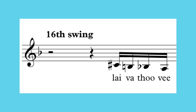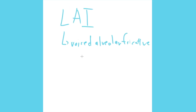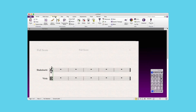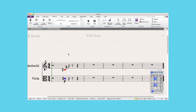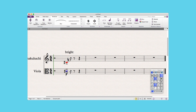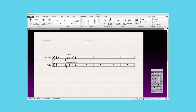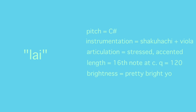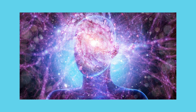Let's take the first note, which is C-sharp on the syllable 'lie.' From the L, we know that it's a voiced alveolar fricative, so it'll be stressed and accented and pretty bright. We have a diphthong — an A vowel and an I vowel — so we know that this will be doubled by shakuhachi and viola. I'll ask the shakuhachi to play bright using its embouchure, and the viola will play poco sul ponticello. There's no ending consonant, so we don't have to worry about that. An intense amount of information was coded into just 'lie': pitch, instrumentation, articulation, length, and even brightness. Imagine being able to compose and orchestrate with this kind of efficiency.